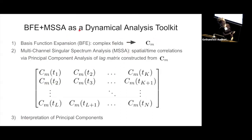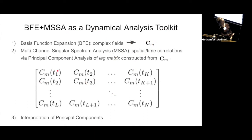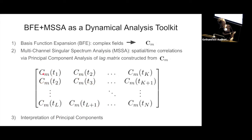We combine basis function expansions with what's called multi-channel singular spectrum analysis (MSSA). That combination allows us to find both spatial and time correlations within the basis function expansions. We take 200 million particles and represent their density distribution by a small set of numbers — the expansion coefficients. Each coefficient refers to a particular shape in space, and we build a matrix of these coefficient series across simulation snapshots, lagged by one time snapshot to form columns.